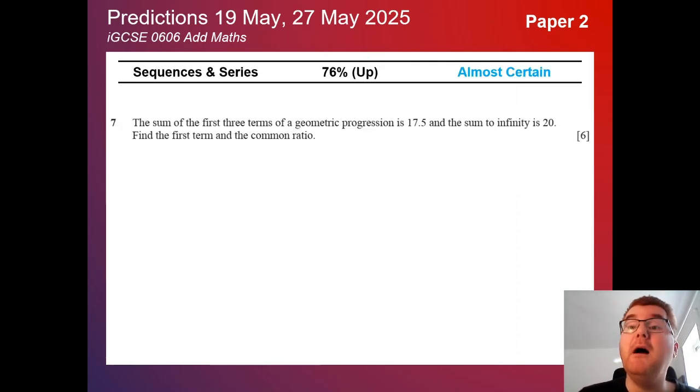Sequences and series, again, up on Paper 2, so at 76%, then usually one big question on at least one of the papers. Again, this is a very typical idea here with a geometric progression. And remember to know your sum to infinity formula.